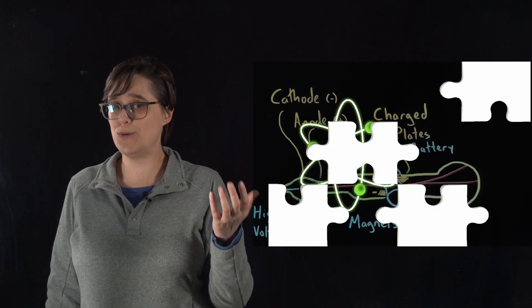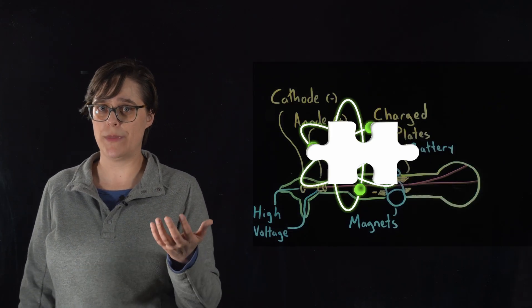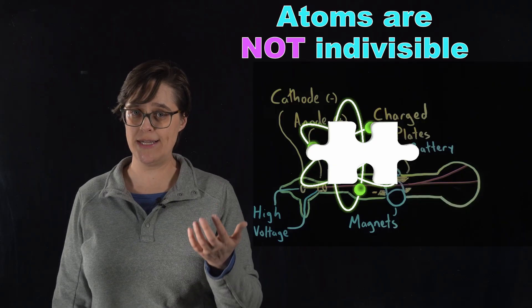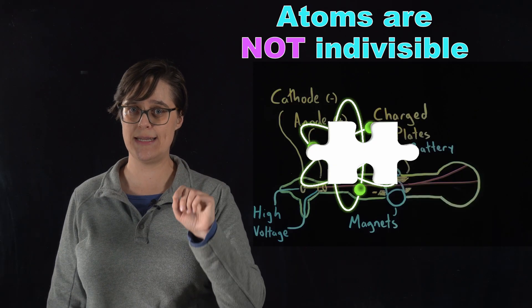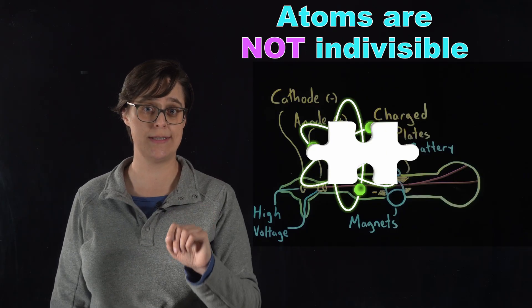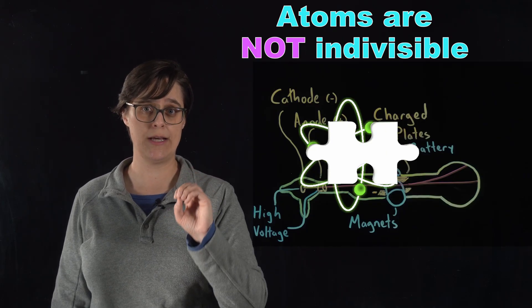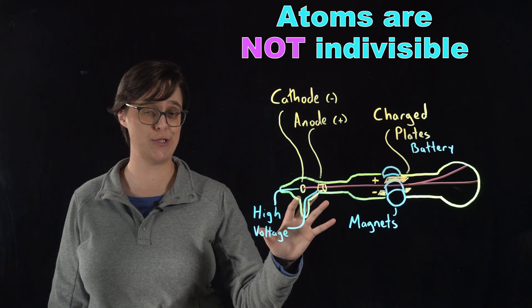And what does this mean for the structure of an atom? Atoms are not indivisible as Dalton had proposed. Instead, they contain smaller subatomic particles, including these negatively charged electrons.